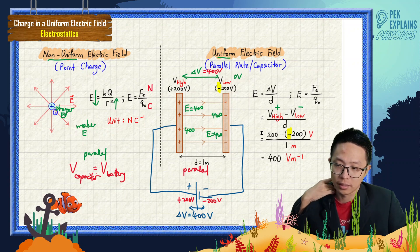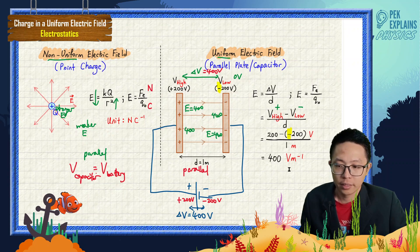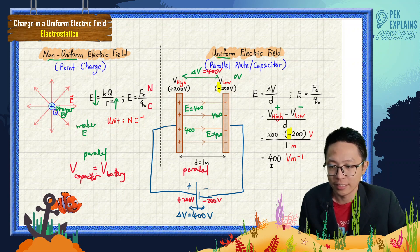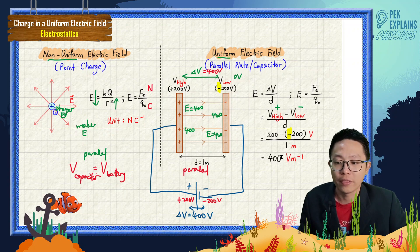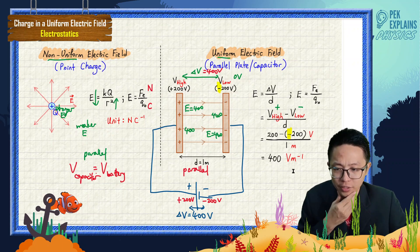So ΔV over d: the distance between the two plates is one meter, so when you divide you get 400 volt per meter. This is the electric field strength between the parallel plates — the uniform electric field between the parallel plates. It has only one value because the separation between the two plates is only one value.